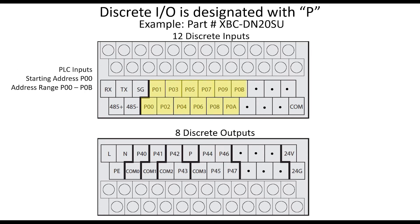XGB PLC discrete inputs begin at address P00. The 12 inputs are addressed P00 through P0B as shown on the wiring legend. The bit addressing is in hexadecimal format.